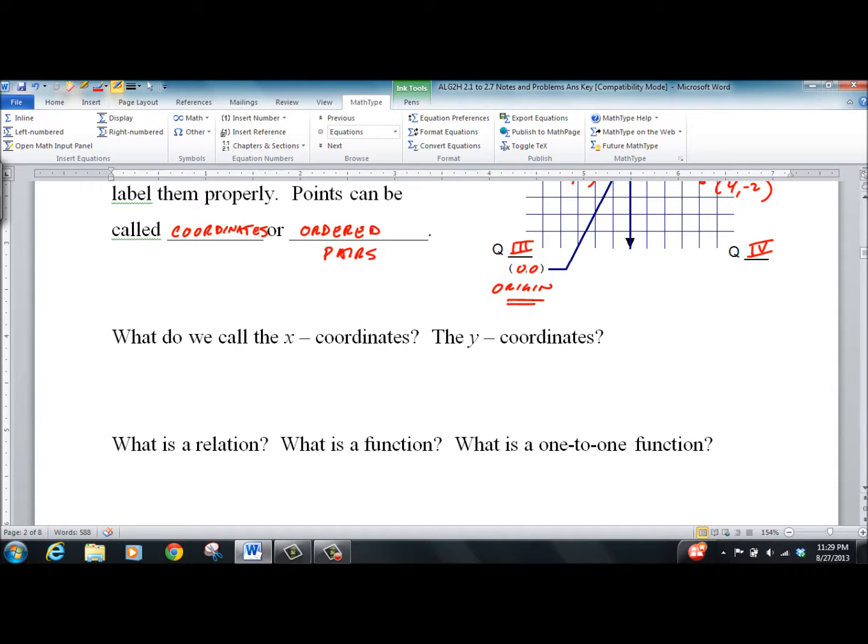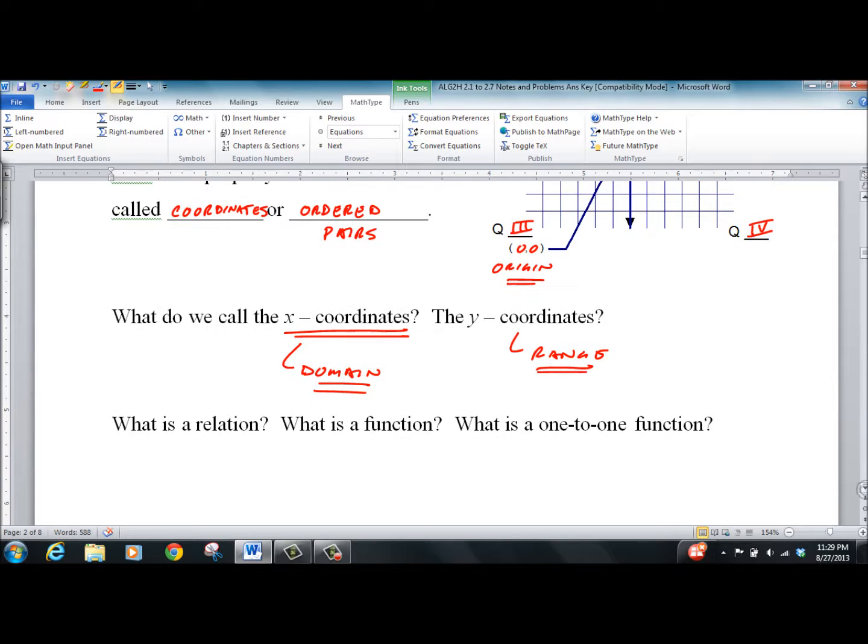What do we call the x-coordinates? They actually have the words abscissa and ordinate and stuff like that, but we're not going there. All of them together, so that's plural, are called the domain. The y-coordinates alone are called the range. So the domain maps to the range. Putting x into your system, a y pops out. That's what domain and range really means.